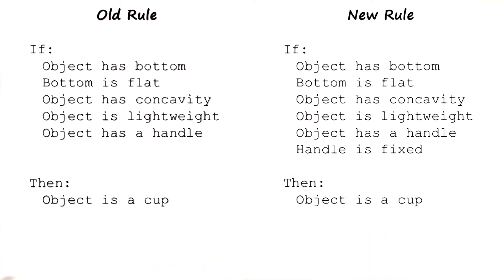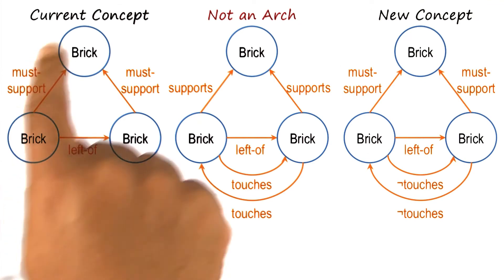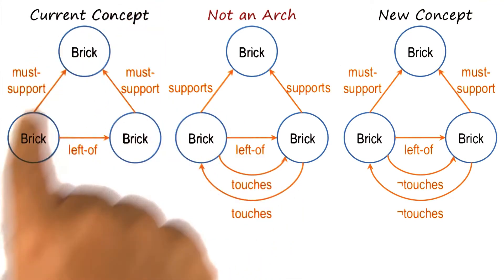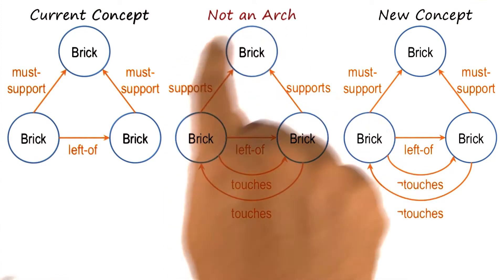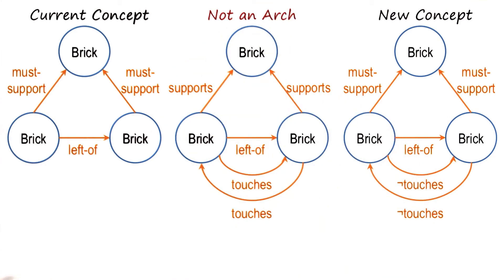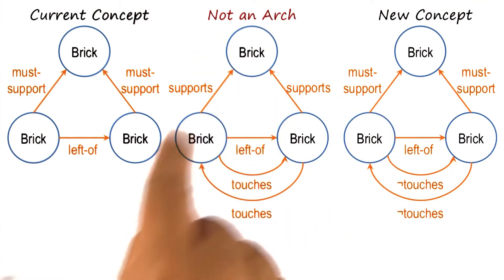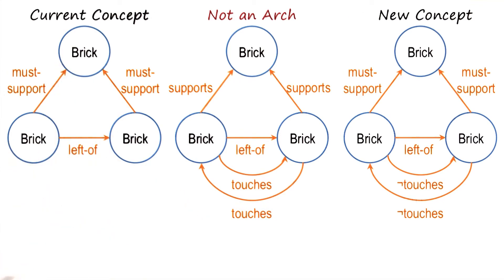This is similar in many ways to incremental concept learning. You may recall that in incremental concept learning, at any particular stage of processing, there was a concept definition. As new examples came, the concept definition changed depending on the new example and the current concept definition.